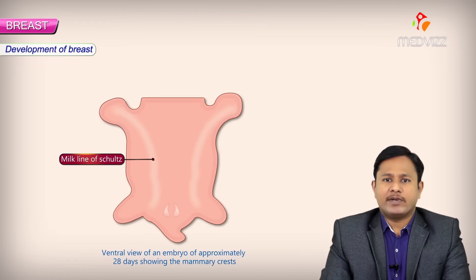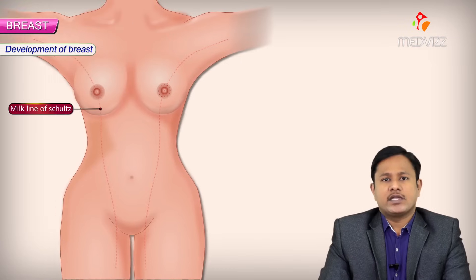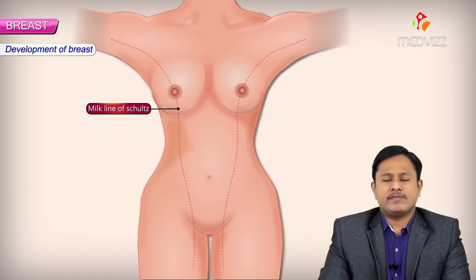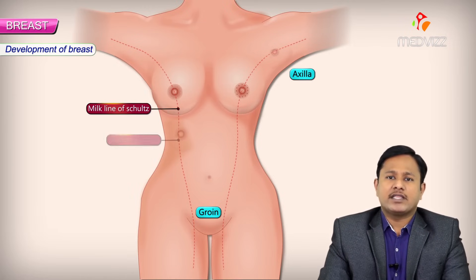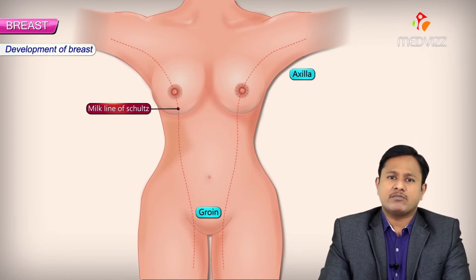Let's start with the development of the breast. The development of the breast starts at the 7th week of fetal development. It actually starts as a thickening along the mammary ridge called as the milk line of Sculch. This milk line mainly extends from the axilla to the groin and is the basic site of development of multiple breasts, if present.